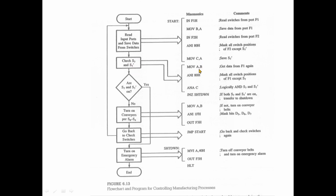We move the B and 6 switch values to the accumulator. The B value is already in the register. In the B register, we have 6 values. Then we switch to check D7. The D7 value is equal to F2. The D7 value is equal to 1.